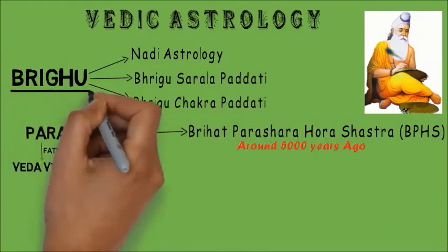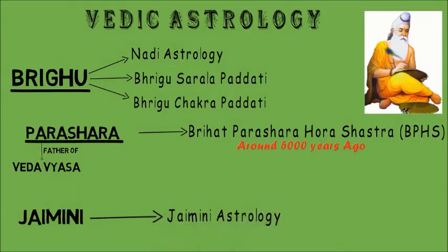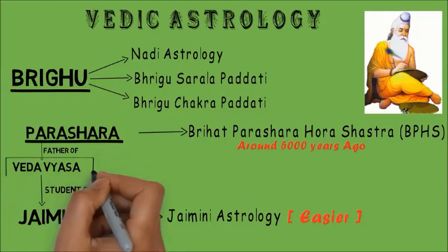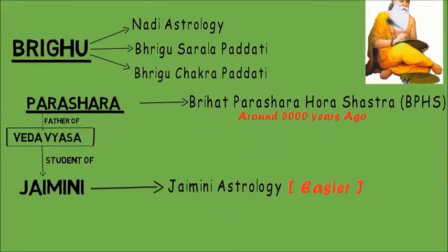So after Bhrigu and Parashara, Maharshi Jaimini created another branch called Jaimini Astrology, which is relatively more easy compared to Parashari Astrology. Jaimini was a student of Vedavyasa who was son of Parashara. This branch was also originated during Mahabharata era.